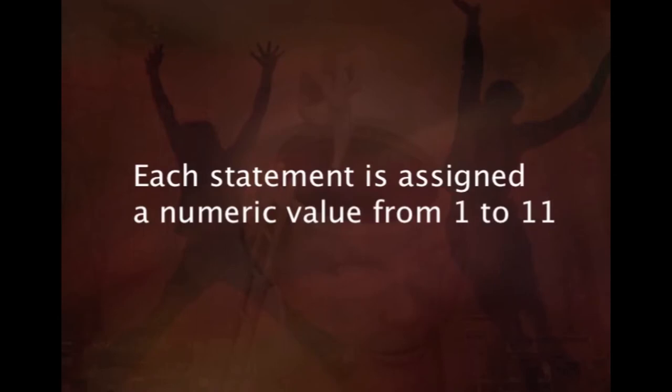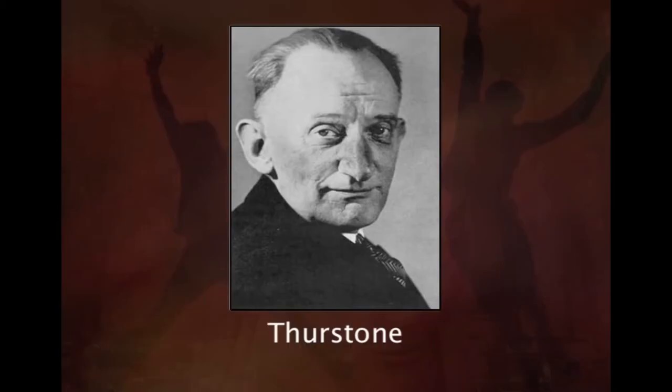The fourth step involves each statement being assigned a numeric value from 1 to 11 by the judges. The fifth step is an essential step where the means and variances are inferred from the judges' rankings, and statements with large variances are excluded as they are evaluated in different ways by different judges. The sixth step involves selecting two or three statements closely related to positions 1 to 11 along the continuum for administration. The seventh task is to administer the selected questionnaire to the respondents.